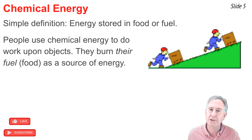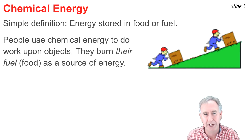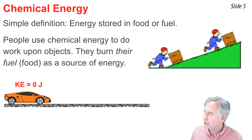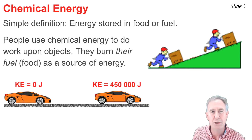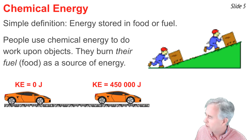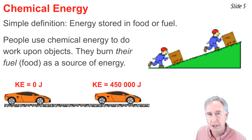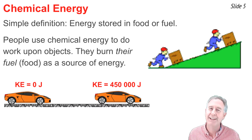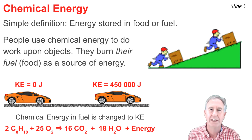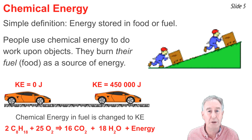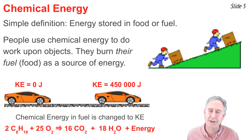That chemical energy is used for the worker to do work on the crate. As a second example, consider a car that accelerates from rest to a high speed across a level highway. There is no change in potential energy, but the kinetic energy changes from 0 joules to 450,000 joules. That energy came from the octane gasoline stored in the car's gas tank. The chemical energy in that octane gasoline is harnessed by a chemical reaction inside the internal combustion engine and converted to the kinetic energy of the car.